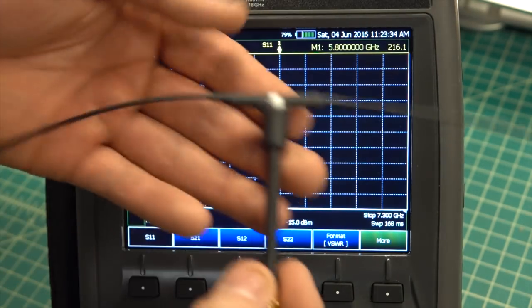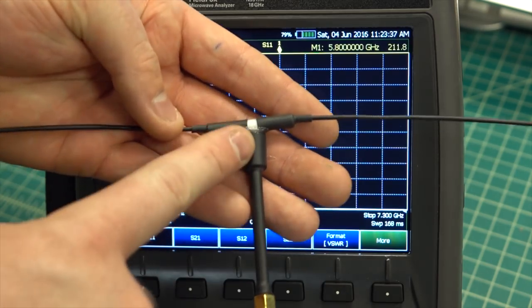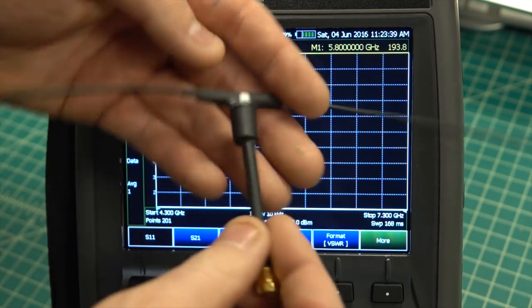One way to reduce this coupling is to use a type of balun called a sleeve balun and it's basically just a ferrite bead placed near the feed point of the antenna.